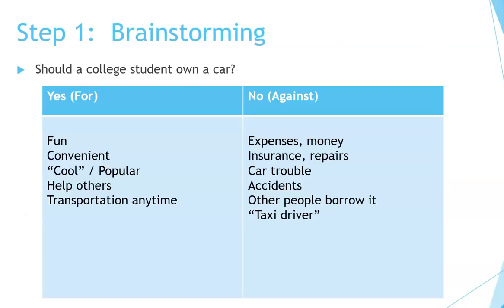Let's look at the example. The topic is: should a student own a car? This person has decided to write down in a graphic organizer some ideas for and some ideas against, categorizing them into two sections. Some ideas for owning a car: it's fun, convenient, it's cool, you can be popular, you can help other people.